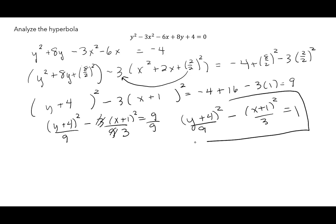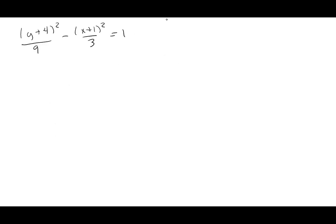This is our starting place. Let's move to a new page for more room. The center is (-1, -4). a is √9 = 3, and b is √3.